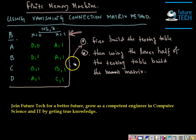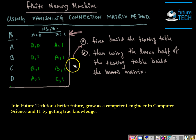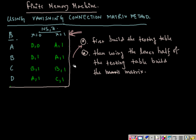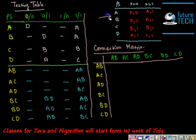First, we need to build a testing table using this machine. Then, using that testing table, we need to build a matrix called a connection matrix. We then need to check for zeros in every row of that matrix, eliminating those rows and their corresponding columns. If we end up with a zero-row, zero-column matrix, then the given machine is a finite memory machine.